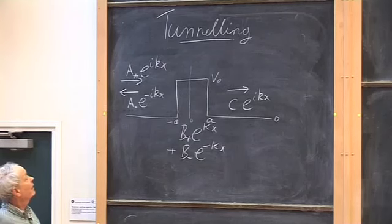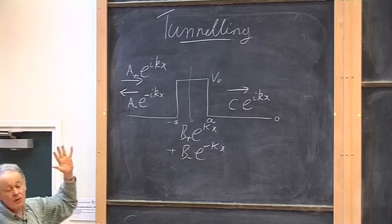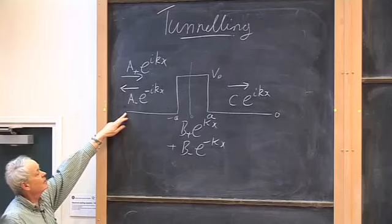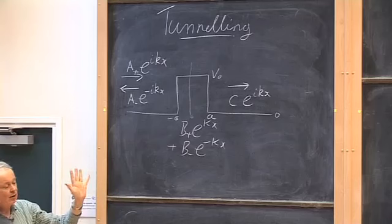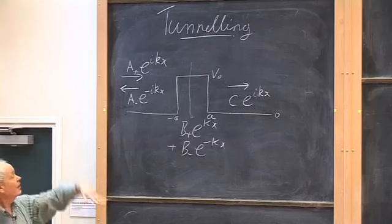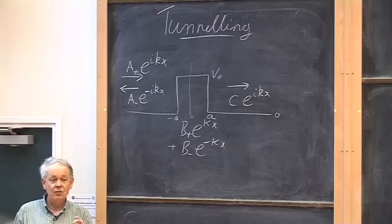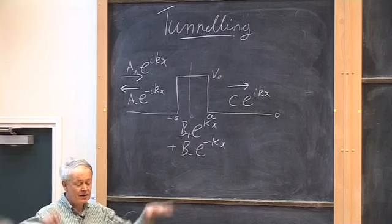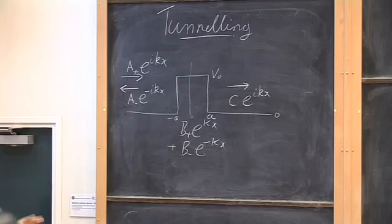The other thing that's different here is that because we are considering particles that are free — because the potential goes to zero outside this interval — and we're considering particles with positive energy, the particles will be able to go off to infinity. So we're not going to find discrete energy levels. We're going to be able to find solutions for any energy. Whereas previously we had a potential that went to infinity as x went to infinity, and that made the energy levels discrete.